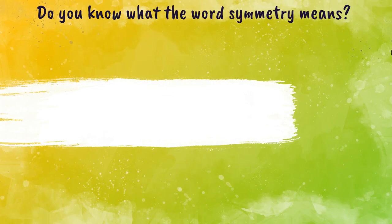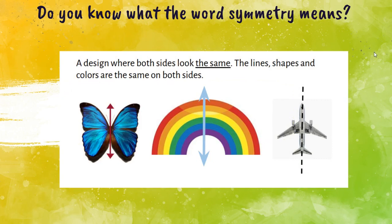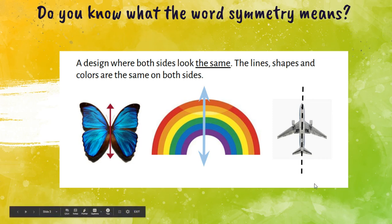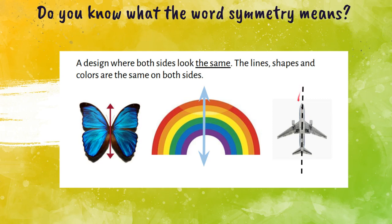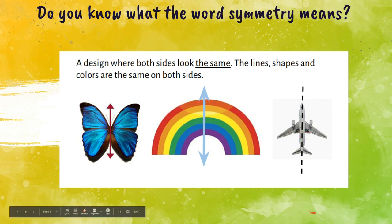Do you know what the word symmetry means? Symmetry is when both sides look the same. The lines, shapes, and colors are the same on both sides. So if you look at your picture right here, you can see that the line is straight down the middle, and on this side and this side it's the same. Same with the rainbow and same with the butterfly.